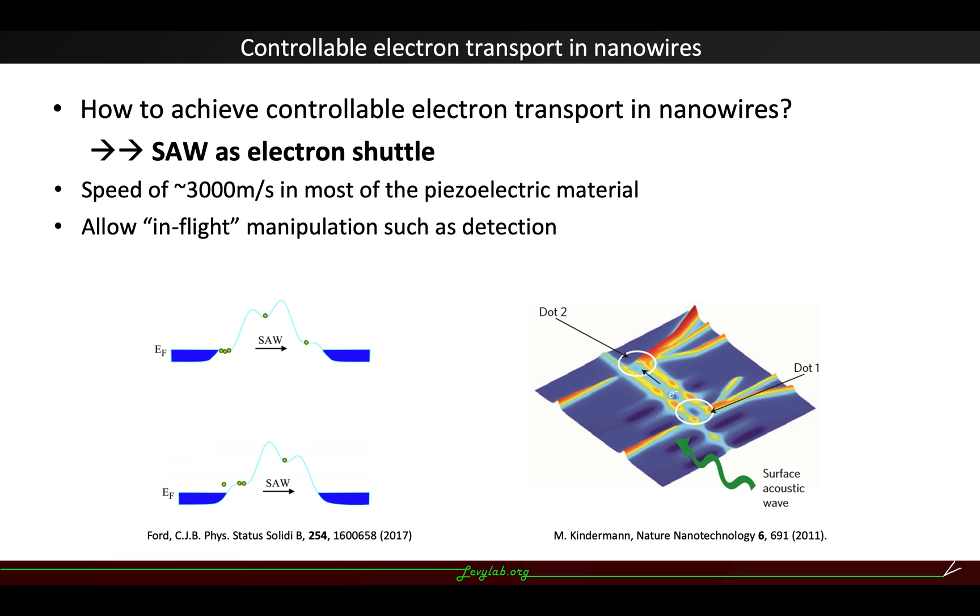There is an intrinsic advantage for surface acoustic wave, which is the speed is around 3000 meters per second in most of the piezoelectric material, which means it will allow us the in-flight manipulation, such as the detection during the measurement.